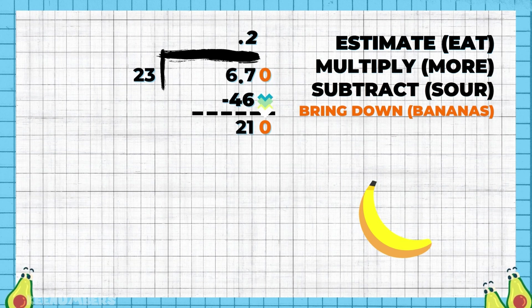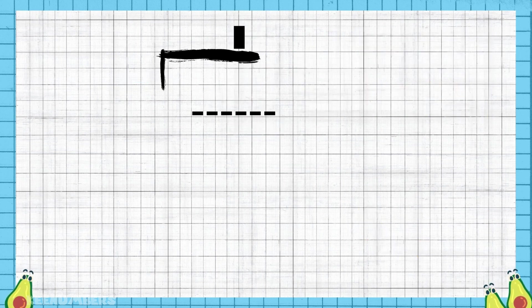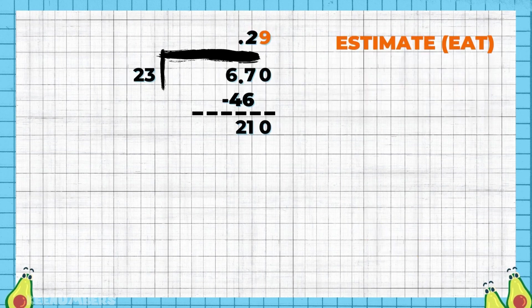Speaking of bananas, you've got to bring down a zero. 6.7 is the same thing as 6.70, same thing as 6.700 - you can add as many zeros as you want. After you've brought down the zero, you need to estimate.